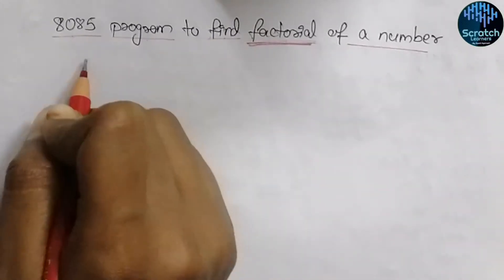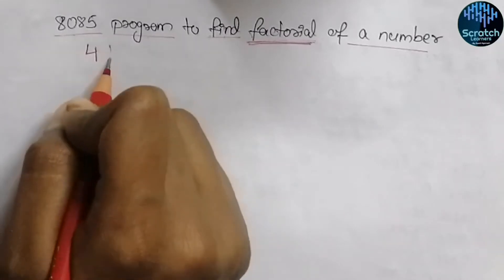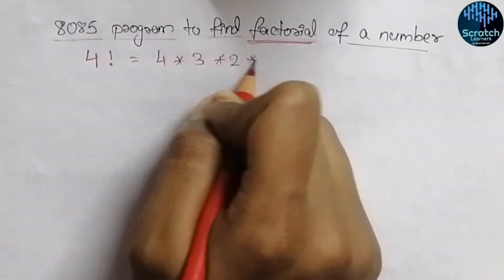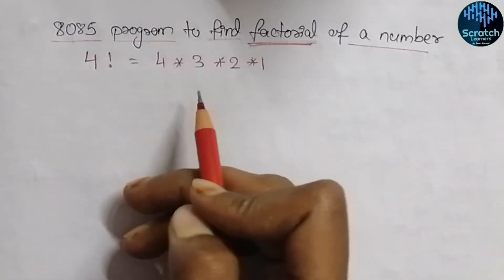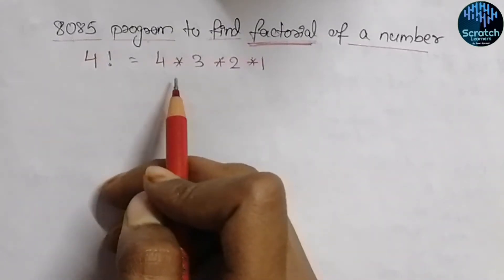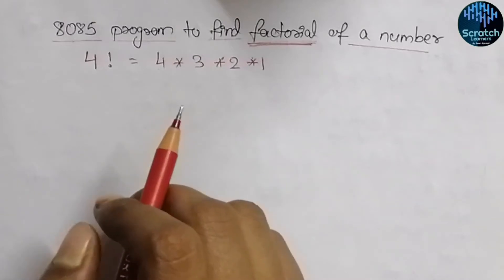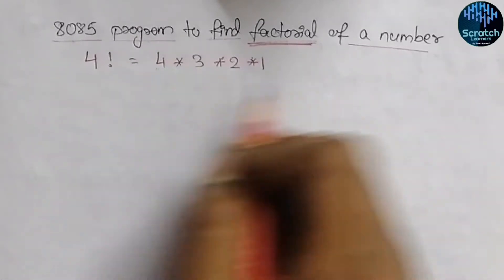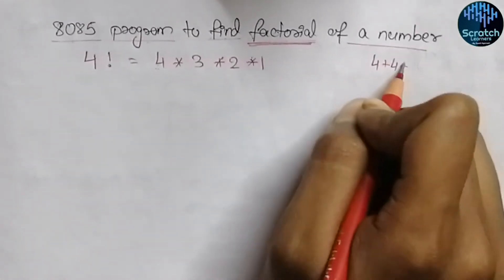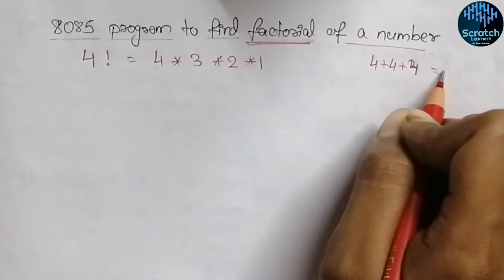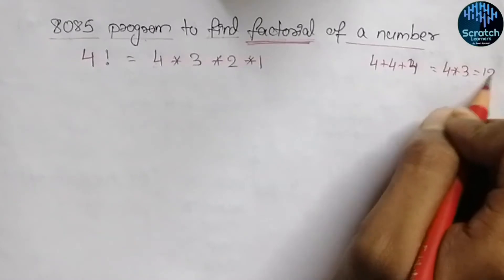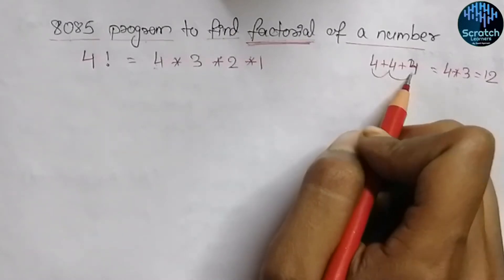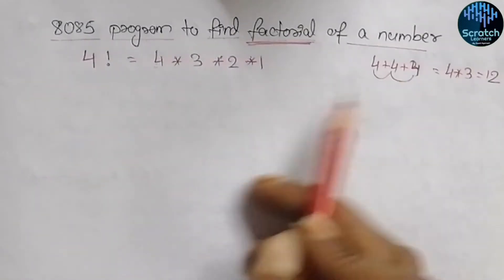If we need to find the factorial of four, then four factorial equals four into three into two into one. In the microprocessor there is no instruction for performing multiplication, so we do multiplication by performing repetitive addition. For example, if we add four with itself three times, that equals four into three, which is twelve. We will use that concept in this video as well.